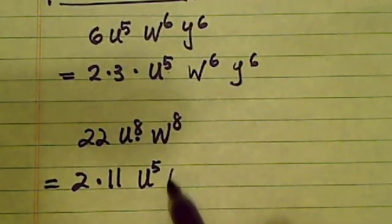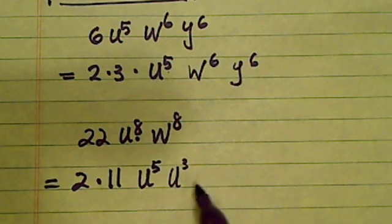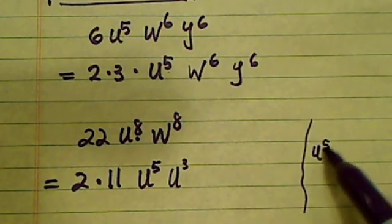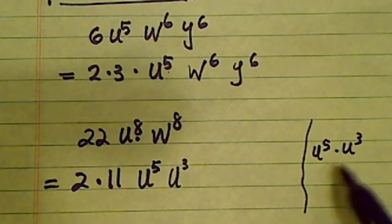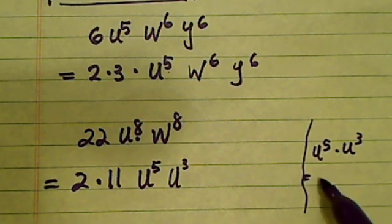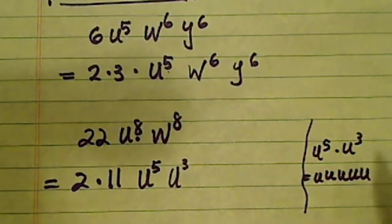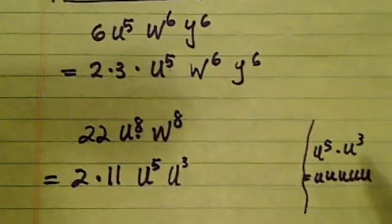u^8 is u^5 times u^3, because on the side here, u^5 times u^3. If you want to really work it out, it's five u's here—let's see if I squeeze it all in there for you.